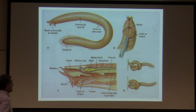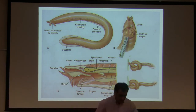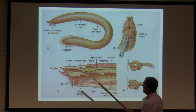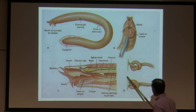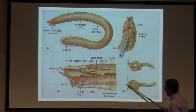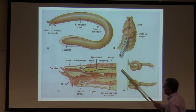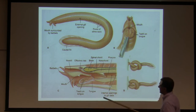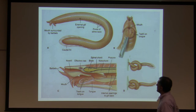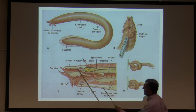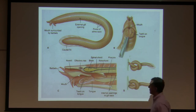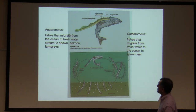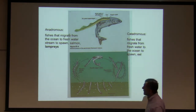Here is a hagfish — not a lamprey, it's a hagfish. They attach to fishes at the gills and suck blood. They have a caudal fin, same as the lamprey, which also has a caudal fin. There are three different types of caudal fin, which I will talk about in a minute. Two terms I would like you to know are anadromous and catadromous.